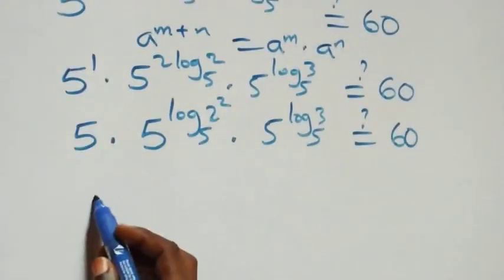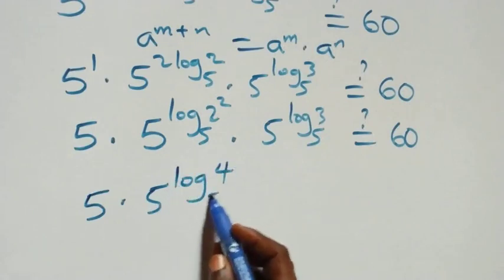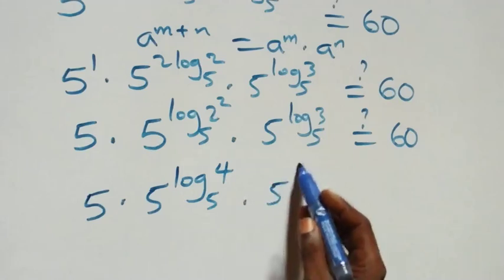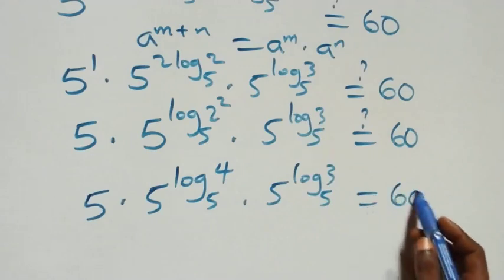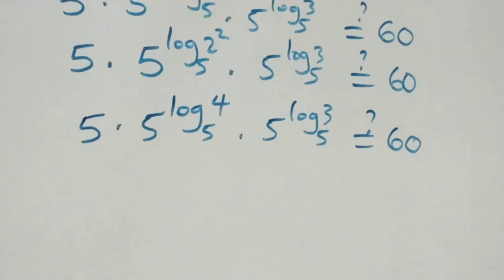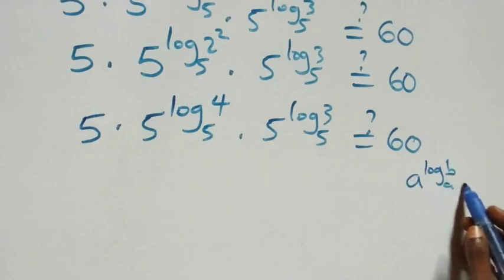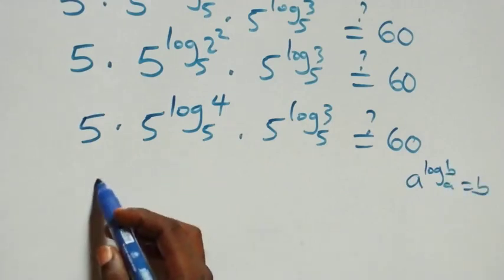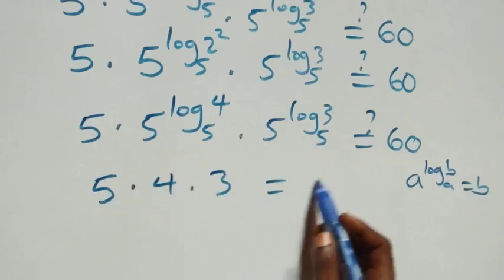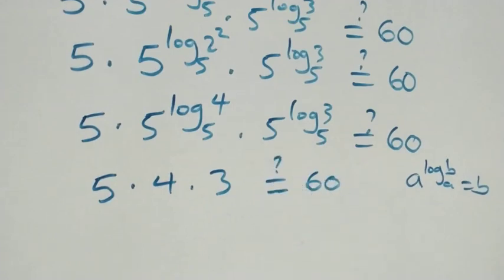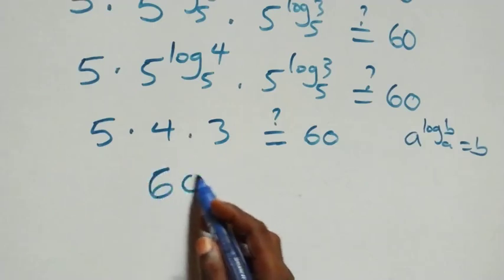Applying the identity a raised to power log_a(b) equals b: 5 raised to power log₅4 gives 4, and 5 raised to power log₅3 gives 3. So we have 5 times 4 times 3. That is 5 times 4 equals 20, and 20 times 3 equals 60, which is equal to 60 on the right-hand side.